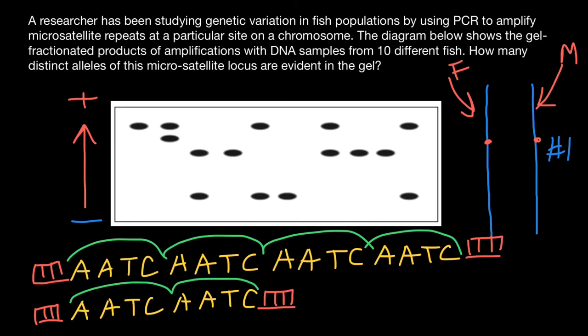Now we can count how many different variants of the alleles we have. All these alleles, as you see, traveled the same distance, so they are of the same size. We can say that these alleles are of the same type. So one, two, three, and four. This is our answer. In this gel, we see four variants of the alleles.